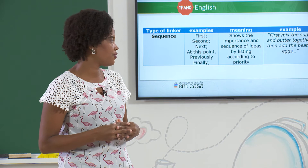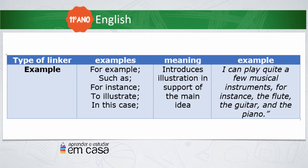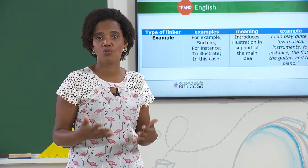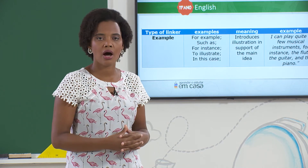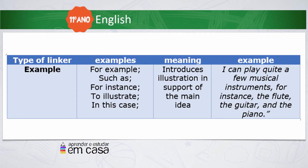If we want to show examples in a sentence, we can use these linkers: for example, such as, for instance, to illustrate, in this case. They introduce illustration in support of the main idea. I believe this one you know well — perhaps you use 'for example' more — but now you know other ways to say so. For example: 'I can play quite a few musical instruments — for instance, the flute, the guitar, and the piano.'